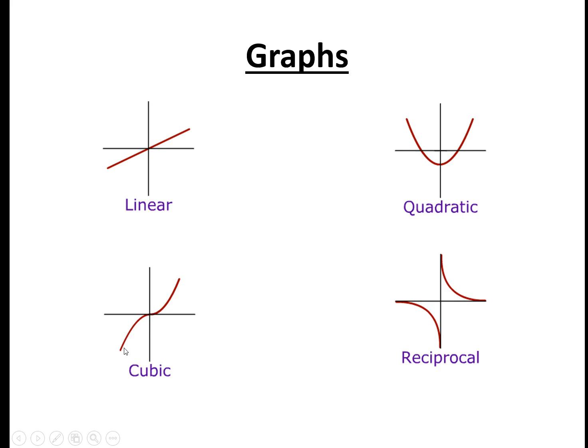Also note that another type of cubic graph would be it coming up back down again and then going back up, so kind of having a maximum and a minimum point. But it's the same type of graph, it'll just have a slightly different equation.